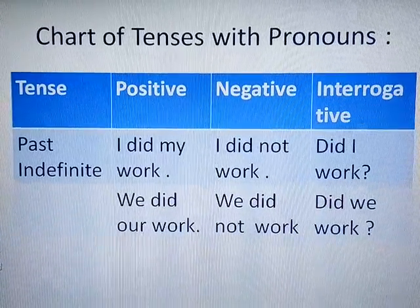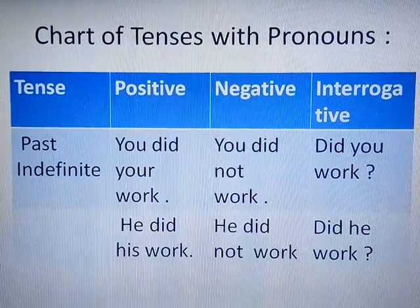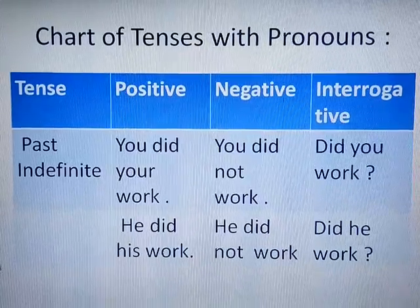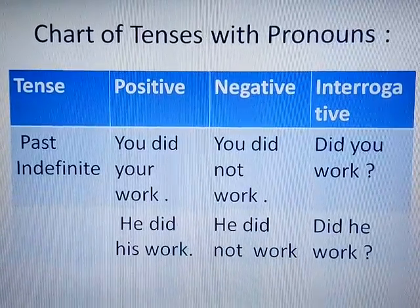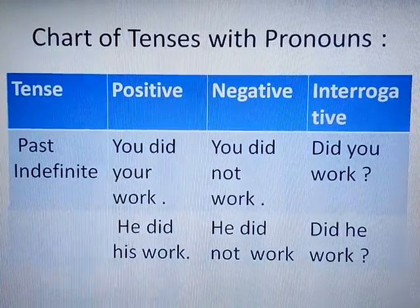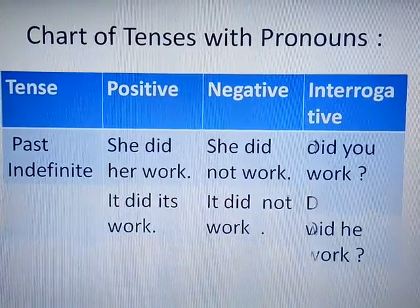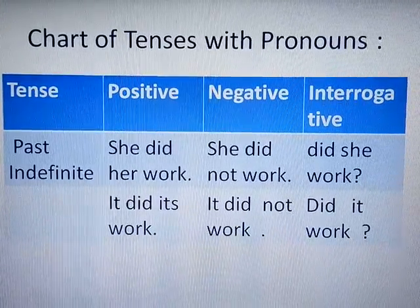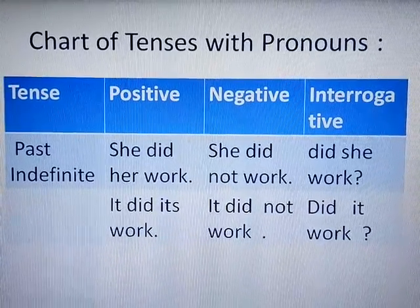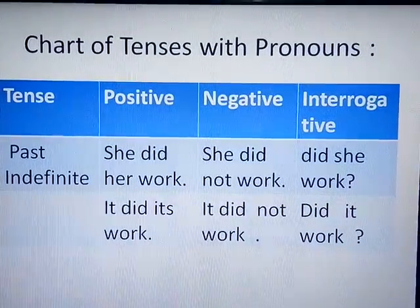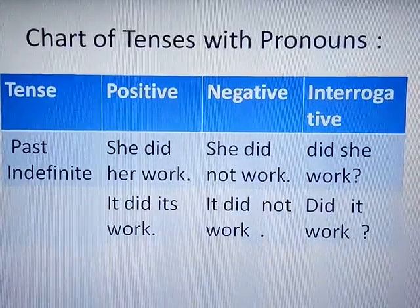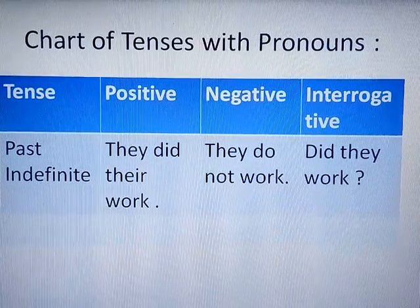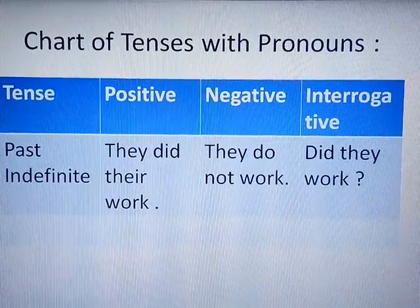Conjugation examples: Positive — 'You did your work.' Negative — 'You did not work.' Interrogative — 'Did you work?' Positive — 'He did his work.' Negative — 'He did not work.' Interrogative — 'Did he work?' Similarly: 'She did her work / She did not work / Did she work?' 'It did its work / It did not work / Did it work?' 'They did their work / They did not work / Did they work?' Thank you.